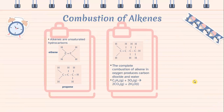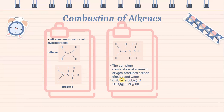Combustion of alkenes. Alkenes are unsaturated hydrocarbons with a double carbon bond surrounded by hydrogen. An example is ethene, and propene has three carbons with one double bond followed by another carbon, surrounded by hydrogen. The complete combustion of alkenes in oxygen produces carbon dioxide and water.